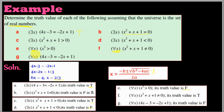For all x, 4x minus 3 equals minus 2x plus 1. Substituting x equals 1: 4 times 1 minus 3 equals 1, and minus 2 times 1 plus 1 equals minus 1. Since 1 is not equal to minus 1, the statement is false for x equals 1. Therefore the truth value is FALSE.